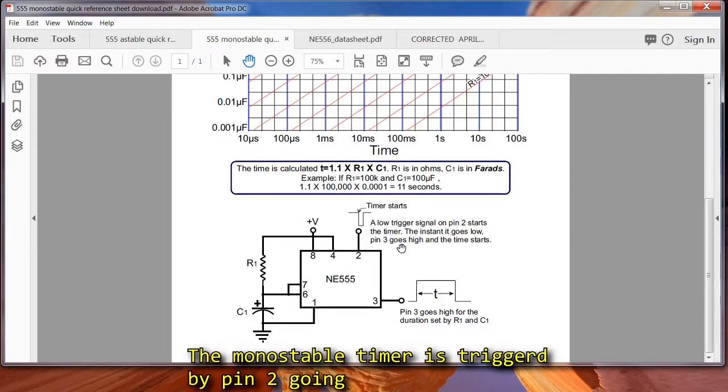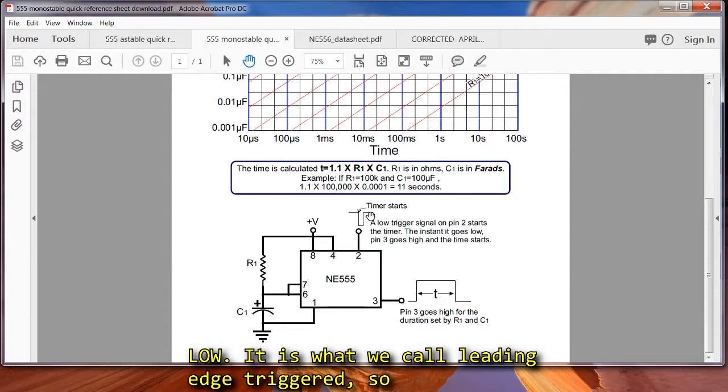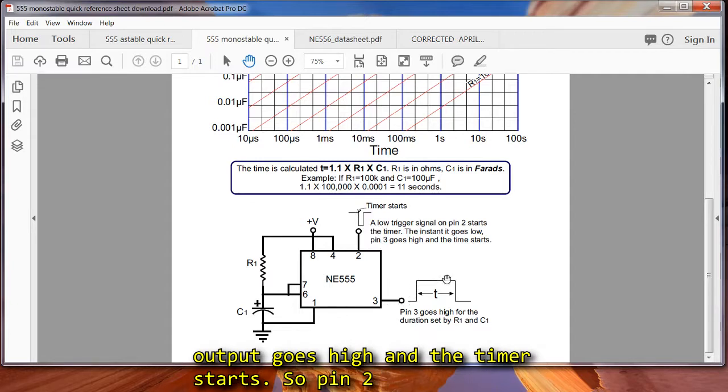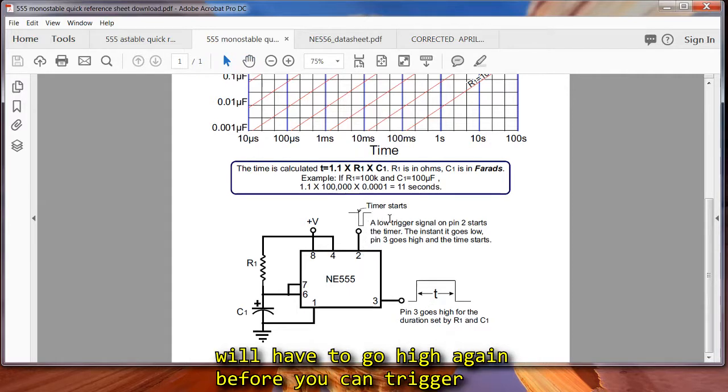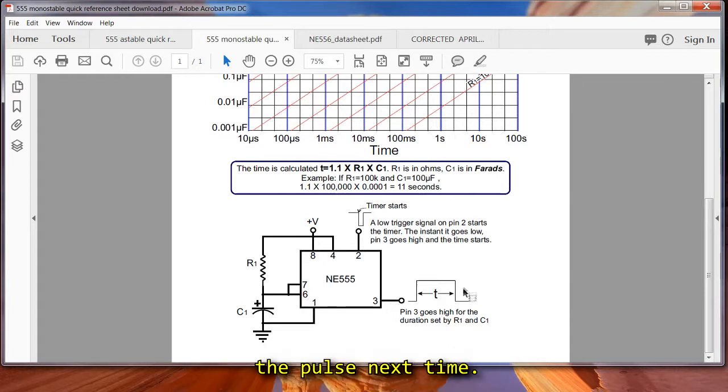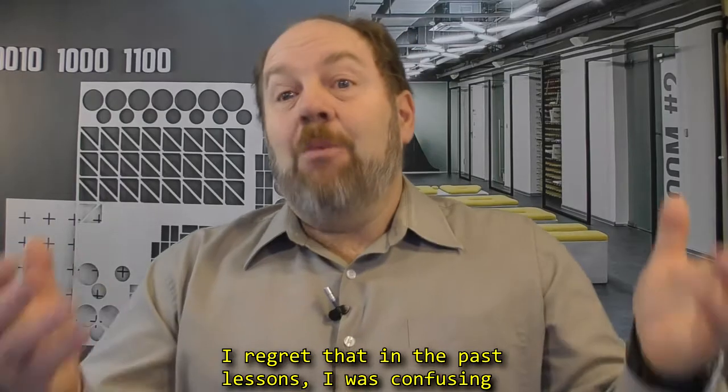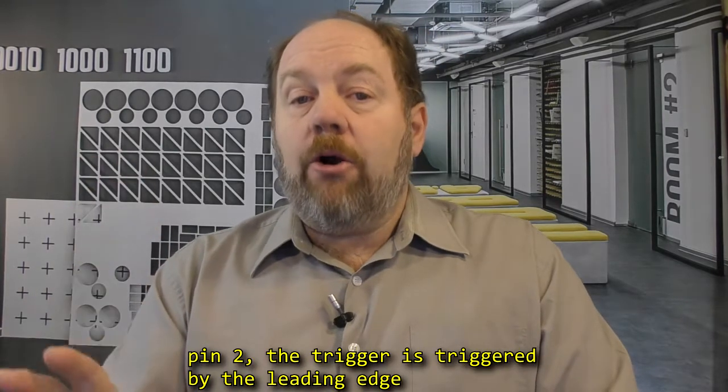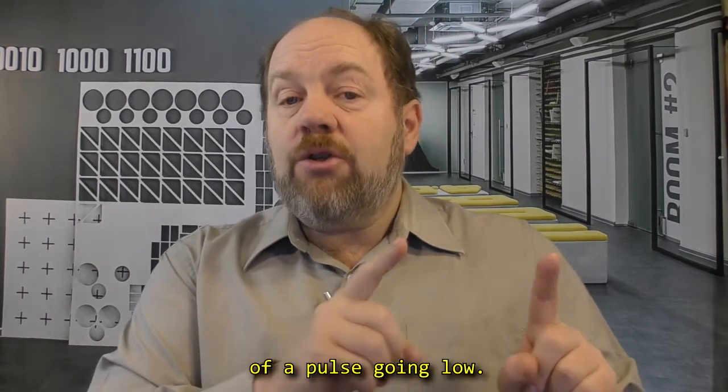So the monostable timer is triggered by pin 2 going low. It is what we call leading edge triggered. So pin 2 is held high, and the moment it goes low, the output goes high, and the timer starts. So pin 2 will have to go high again before you can trigger the pulse the next time. I regret that in the past lessons I was confusing in my descriptions of how the circuit worked. So pin 2, the trigger is triggered by the leading edge of a pulse going low.